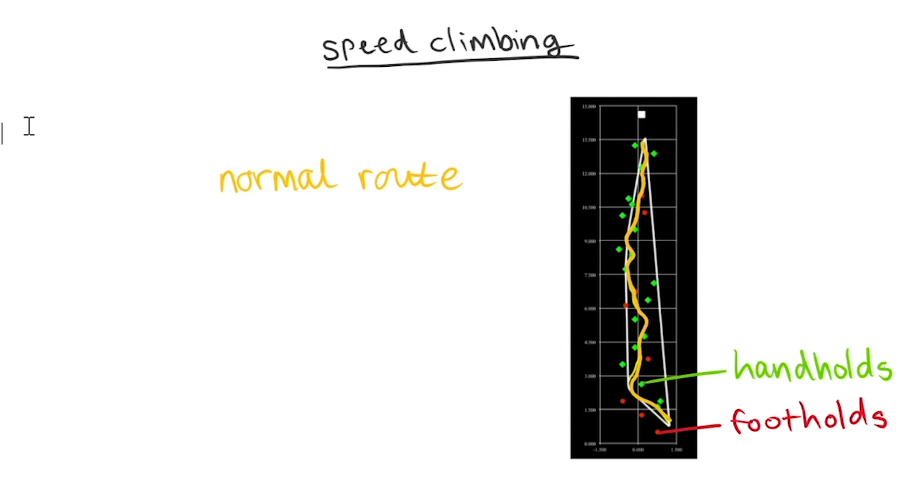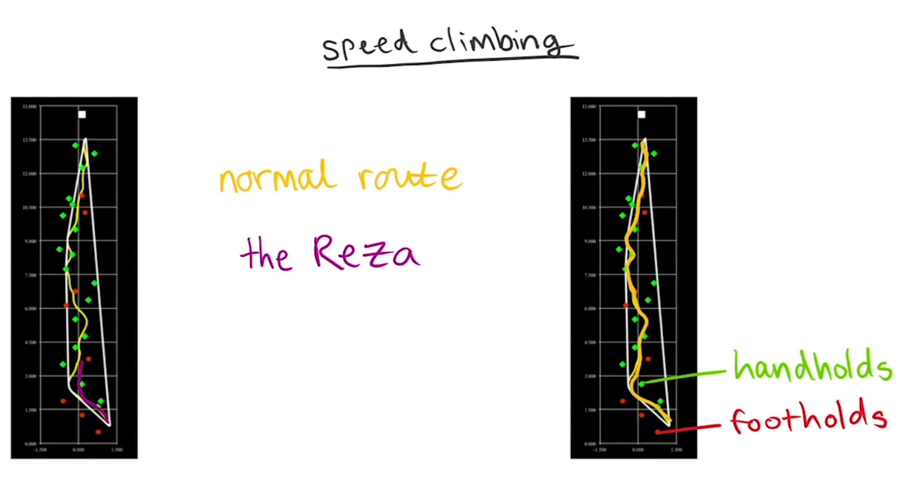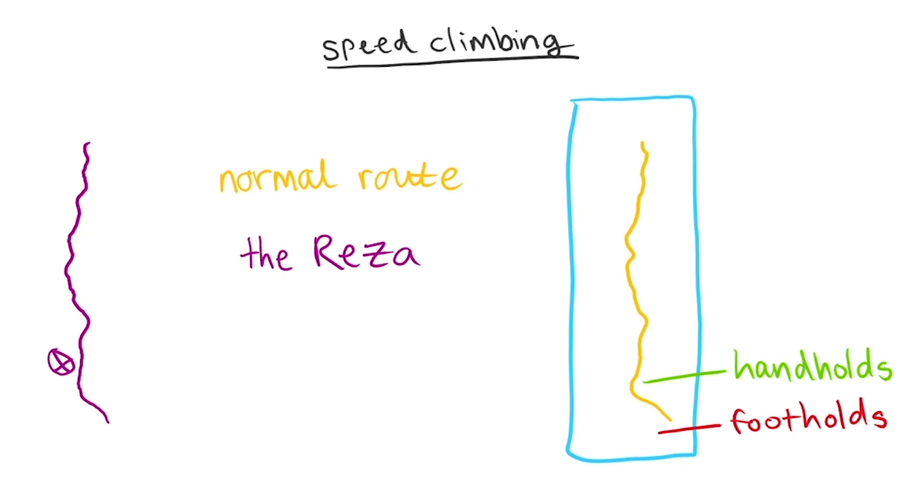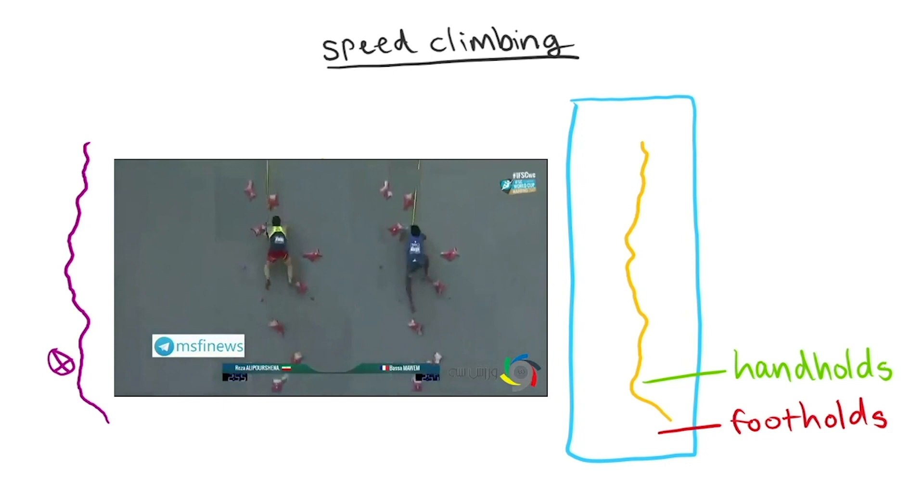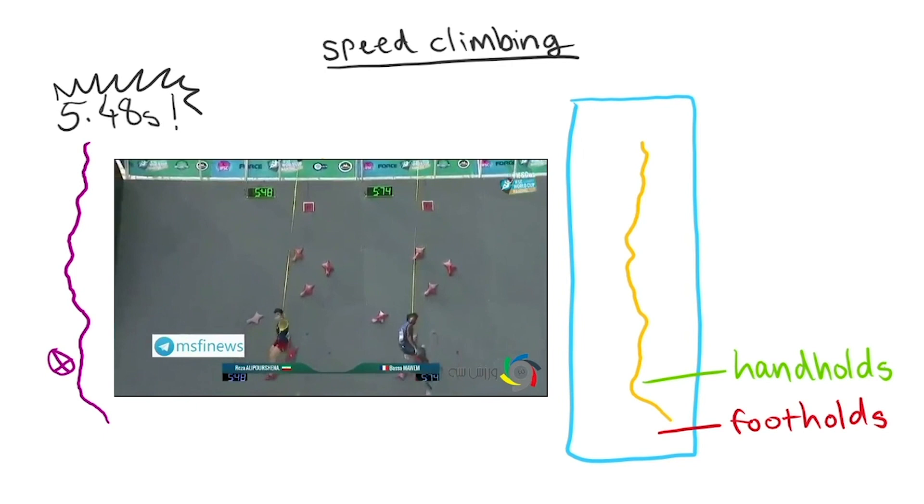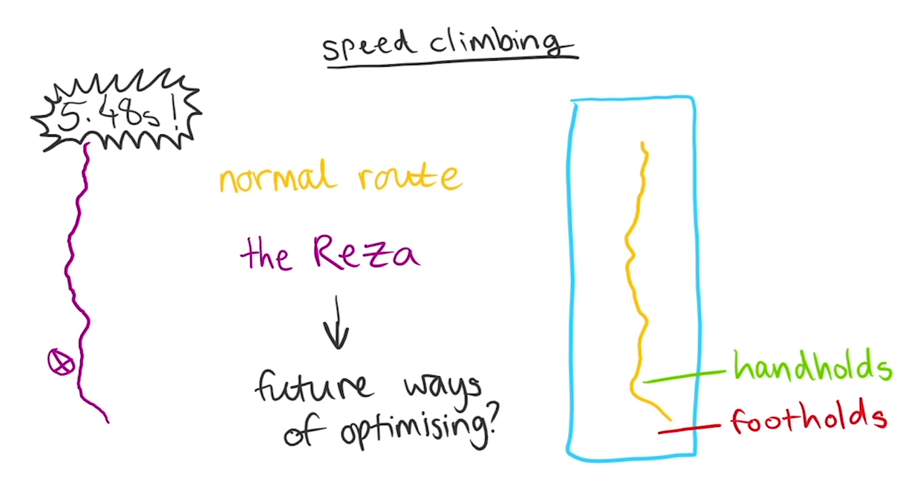This results in new moves like the Reza. While normally the starting strategy involves swinging out to the left to reach the fourth hold, Iranian climber Reza Alipur managed to completely bypass it in 2017. Keeping his trajectory on a straighter path helped him set a world record of 5.48 seconds. The record for speed climbing is becoming tougher as more climbers attempt it, but we can expect future breakthroughs to involve similar ways of optimising for a straight line upwards.